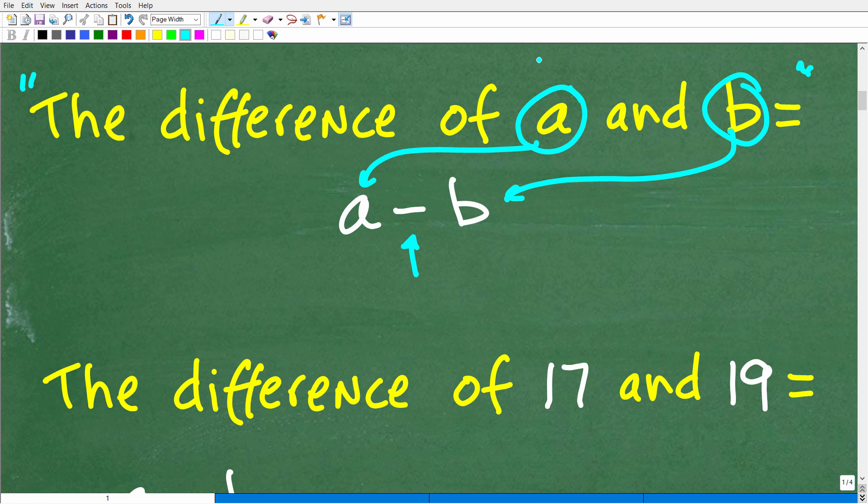So the difference of 17 and 19, we have to consider the order. That's 17 minus 19, not 19 minus 17. And this has huge implications when we actually calculate this out.